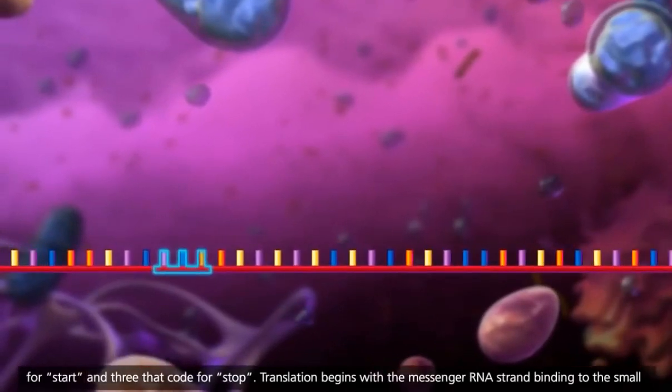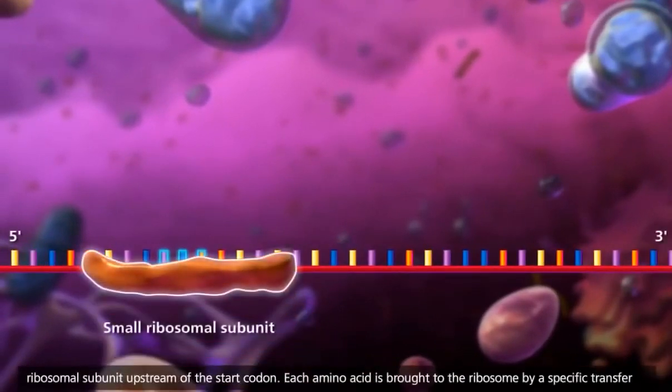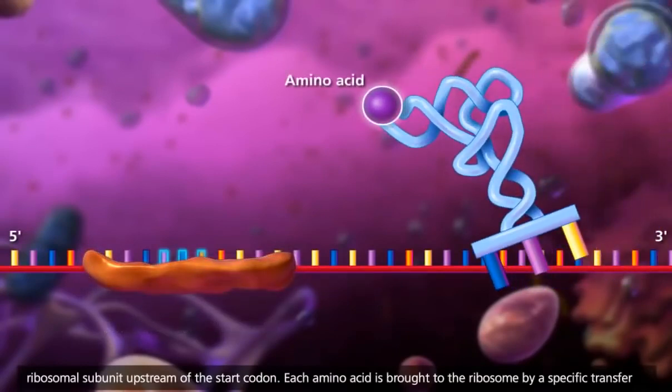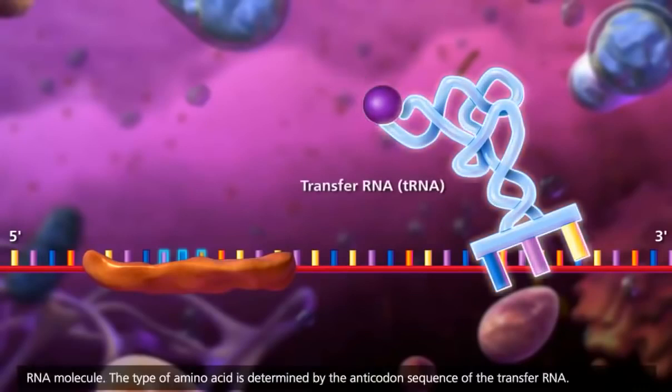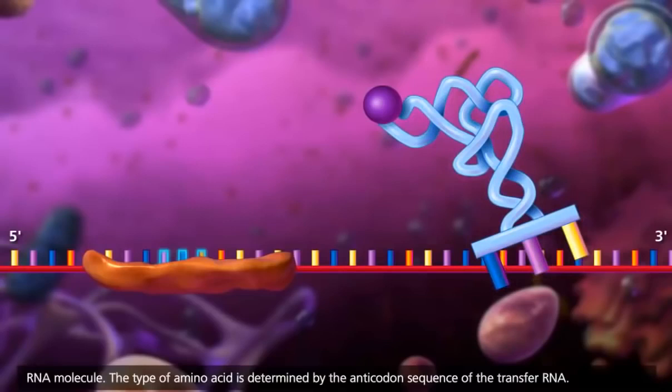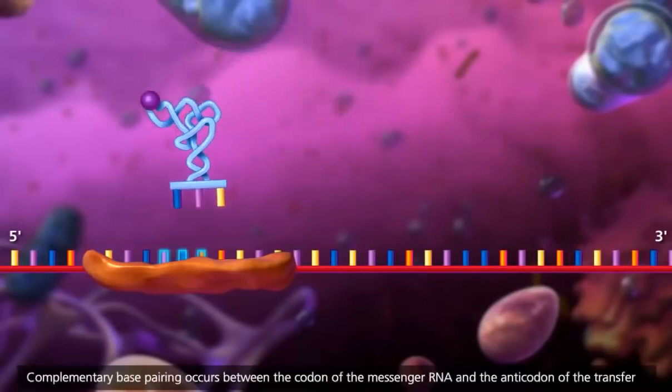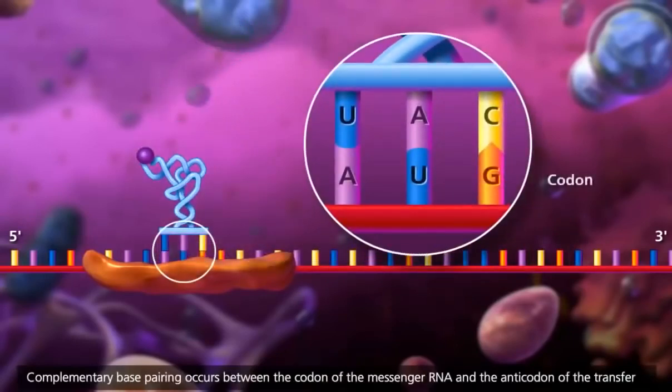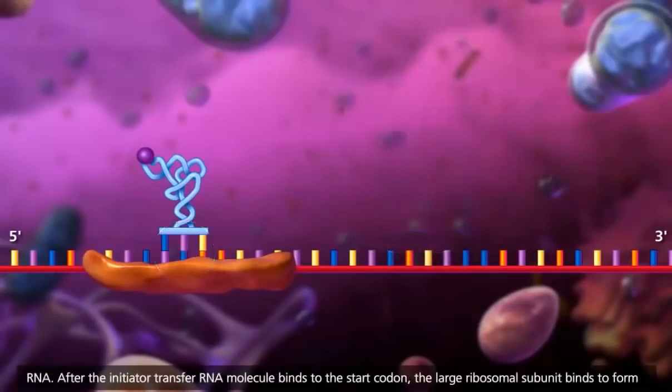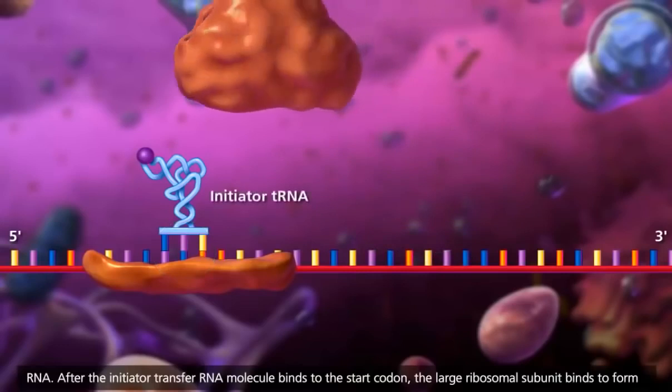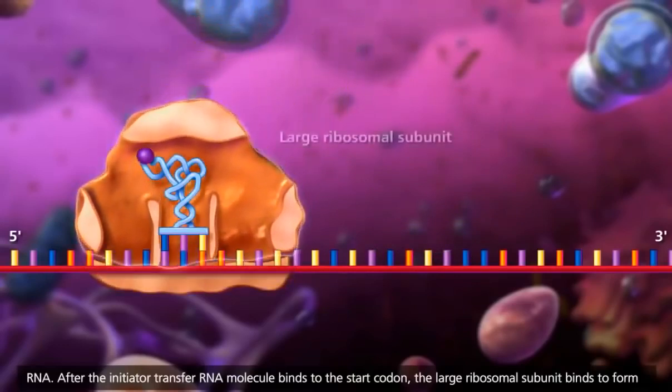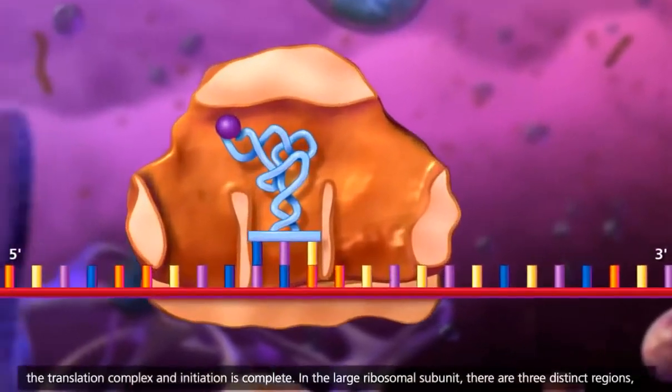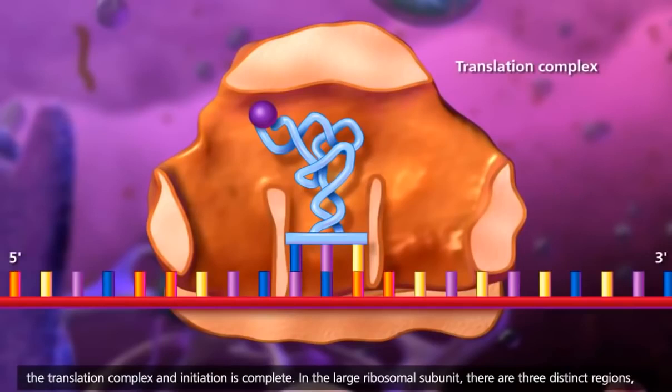Translation begins with the messenger RNA strand binding to the small ribosomal subunit upstream of the start codon. Each amino acid is brought to the ribosome by a specific transfer RNA molecule. The type of amino acid is determined by the anticodon sequence of the transfer RNA. Complementary base pairing occurs between the codon of the messenger RNA and the anticodon of the transfer RNA. After the initiator transfer RNA molecule binds to the start codon, the large ribosomal subunit binds to form the translation complex and initiation is complete.